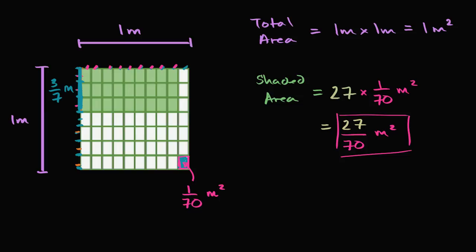Now by that same logic, what is the width going to be? Well, we can see that the entire meter has been divided into ten equal sections. So each section is a tenth, and this distance right over here is going to be a tenth. How many tenths represent the width of the shaded area? We have nine tenths. So this width is nine-tenths of the whole length, which is a meter — so it's nine-tenths of a meter.